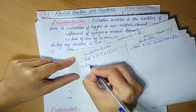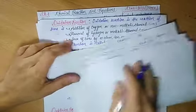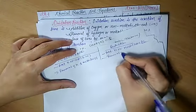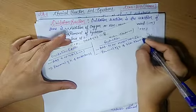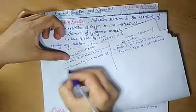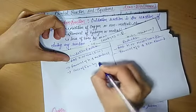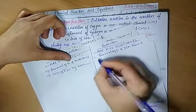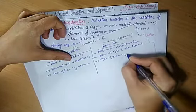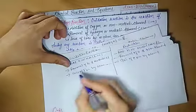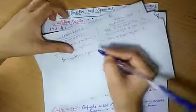In reduction, there is also removal of hydrogen and metallic elements, and for oxidation, there is removal of oxygen and non-metallic elements. In oxidation reaction, there is loss of electrons by an atom, ion, or molecule. In reduction reaction, there is gain of electrons by atoms, molecules, and ions. Then we discussed oxidizing agent and reducing agent.